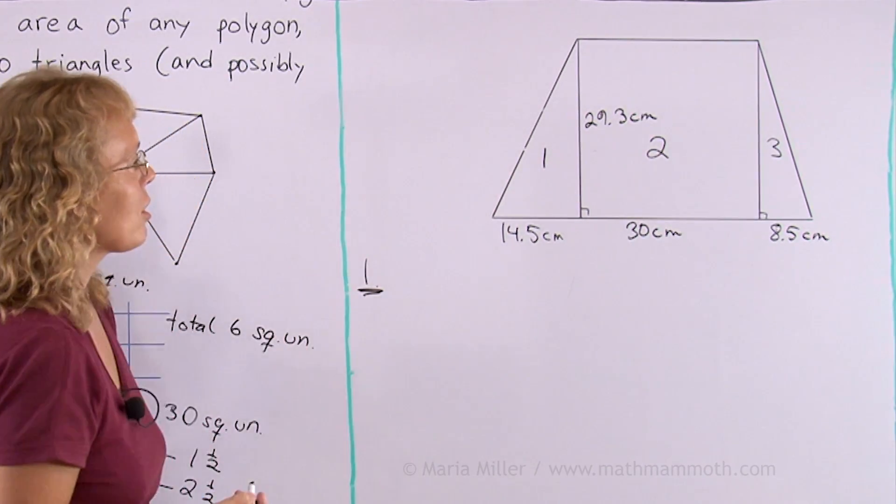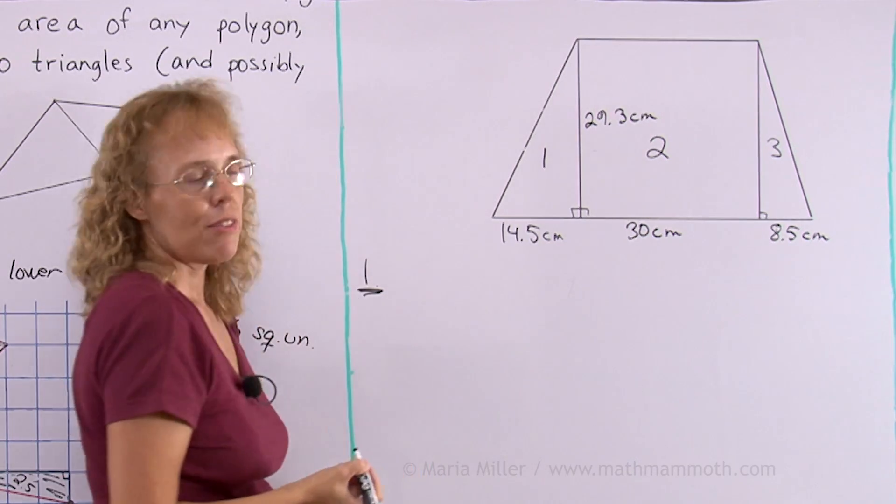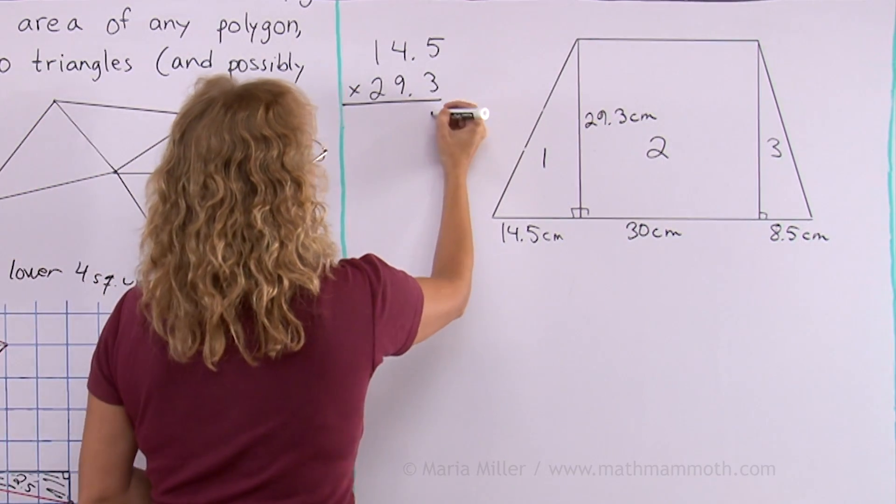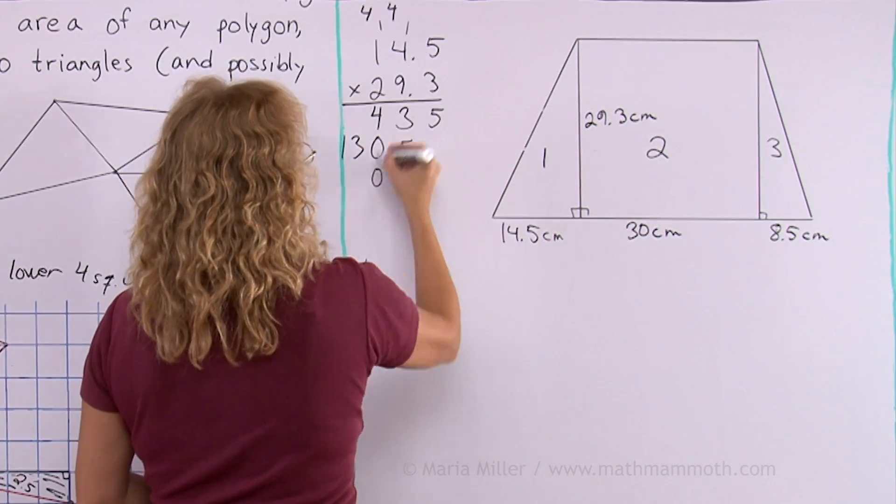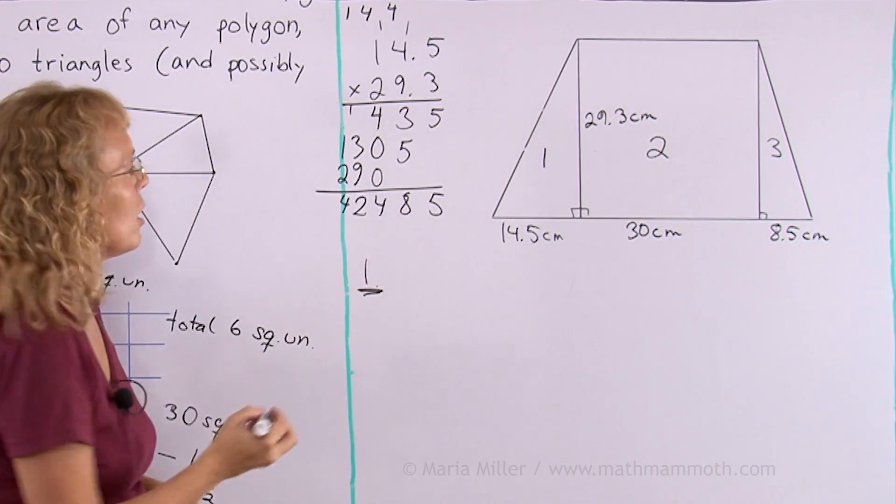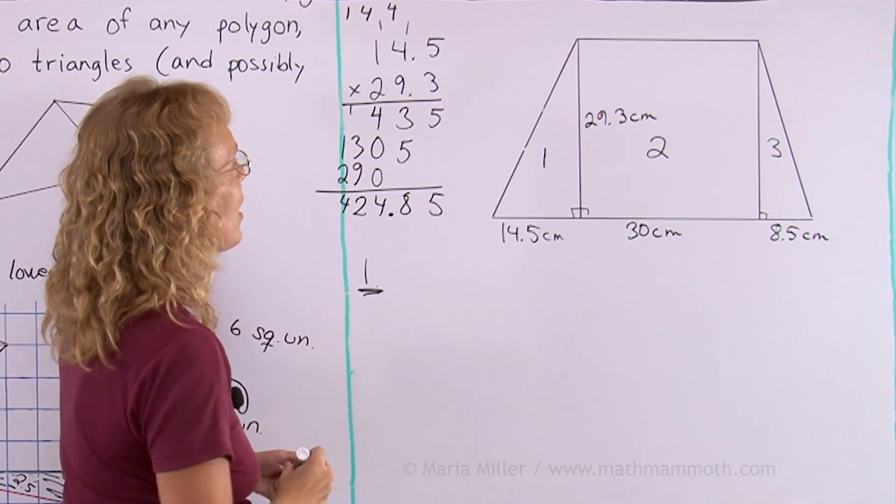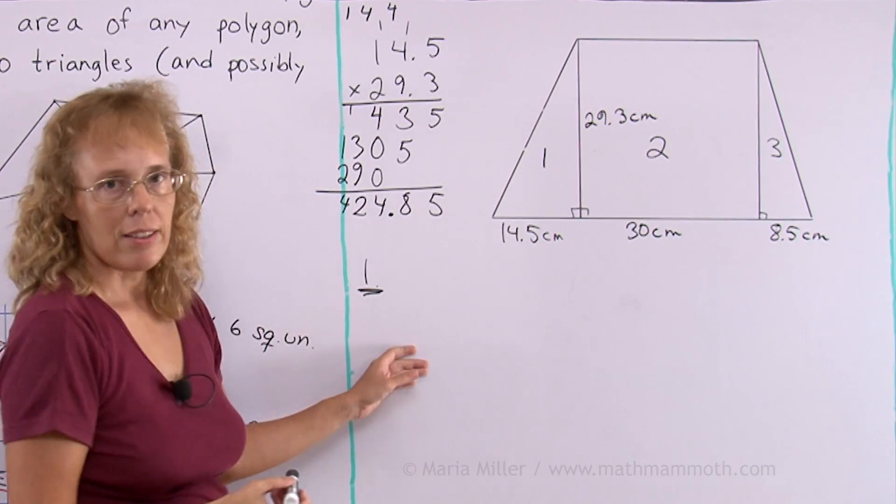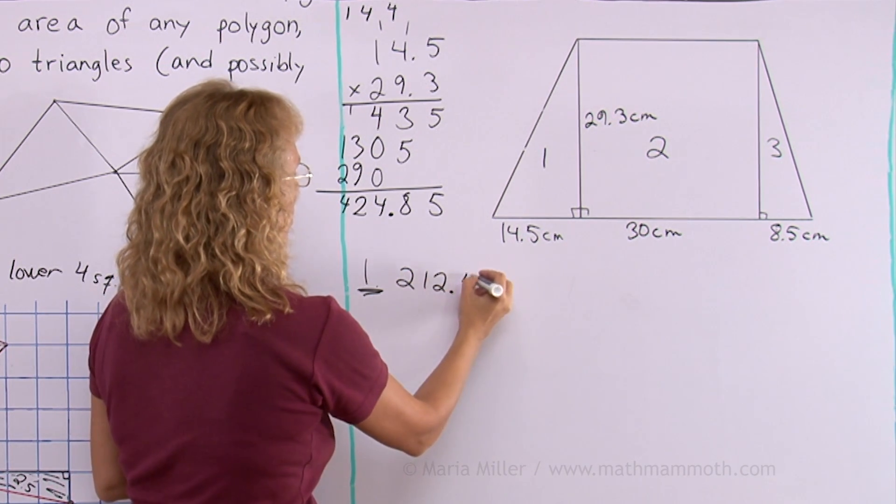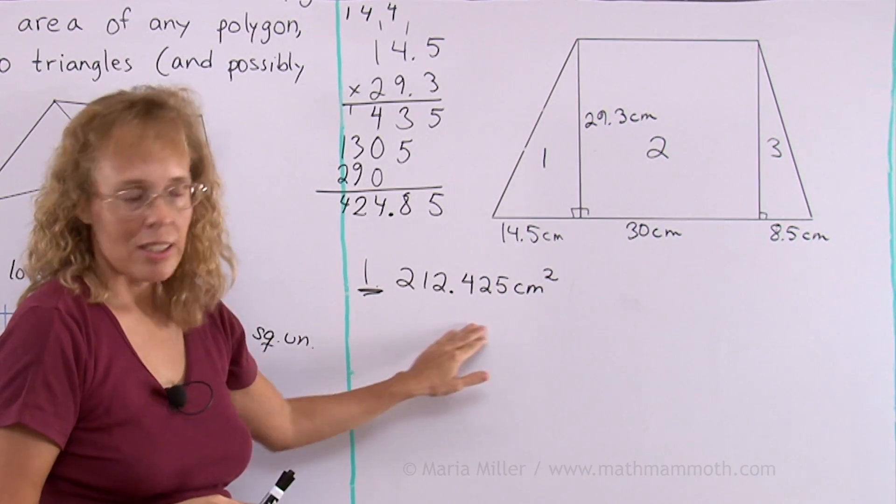Its base is 14.5 centimeters and the altitude here, then we need to divide by two. This is decimal multiplication. Notice there's two decimal digits in the factors so two decimal digits in the answer. Then we need to divide by two. You multiply base times altitude and then divide by two to get the area of a triangle. Half of that would be 212.425. Once I get all these done I will definitely round these numbers for my final answer.